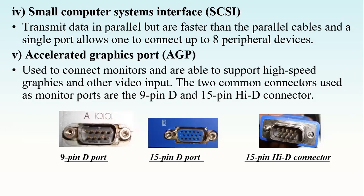The fourth type of data interface cable is called the Small Computer Systems Interface, normally abbreviated as SCSI. These transmit data in parallel but are faster than parallel cables, and a single port allows one to connect up to eight peripheral devices. To identify this kind of port, you will always find the acronym SCSI indicated just next to the port.